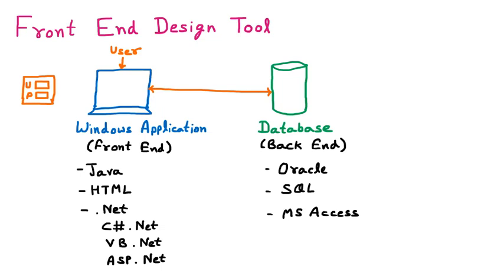So whenever we are going to make any project, the demand is to provide both the front end and the back end. The project you have created is your front end, and where that data will be stored is your back end. For example, if you are making a purchase management project, that project is in any language like HTML or Java, and the complete database will be stored in Oracle, SQL, or MS Access.